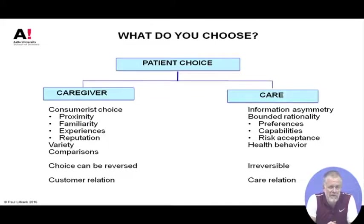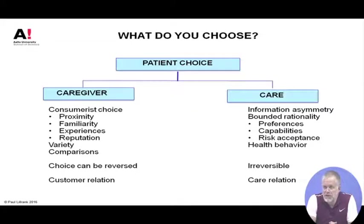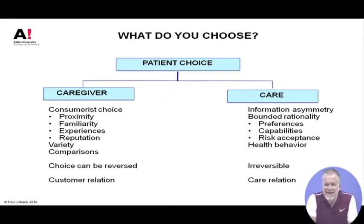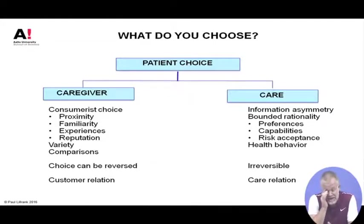Which one of these do you choose? Well, if you have free choice then of course everybody always goes for a superstar. I know one Indian superstar — he's very famous: Devi Shetty. Devi Shetty is the boss of the Narayana Hrudayalaya system in Bangalore.